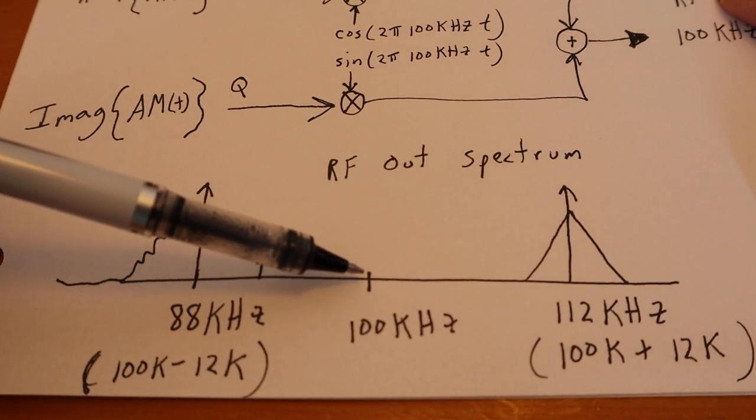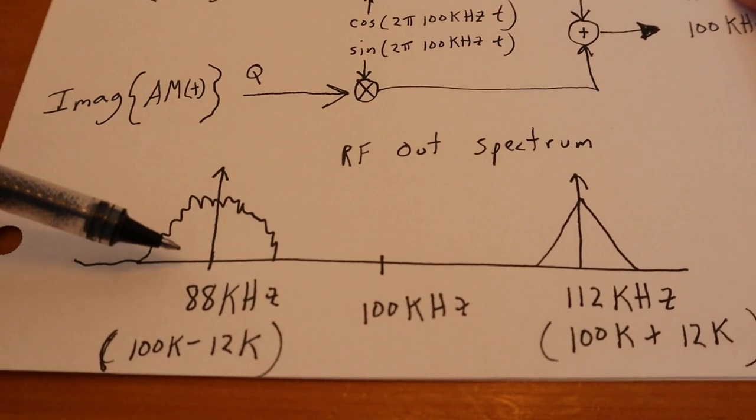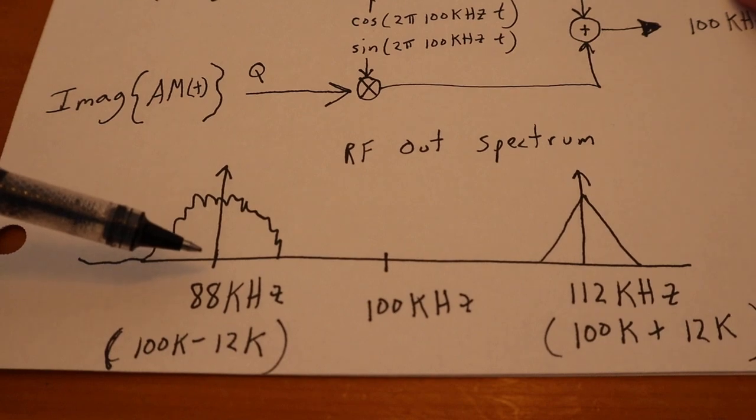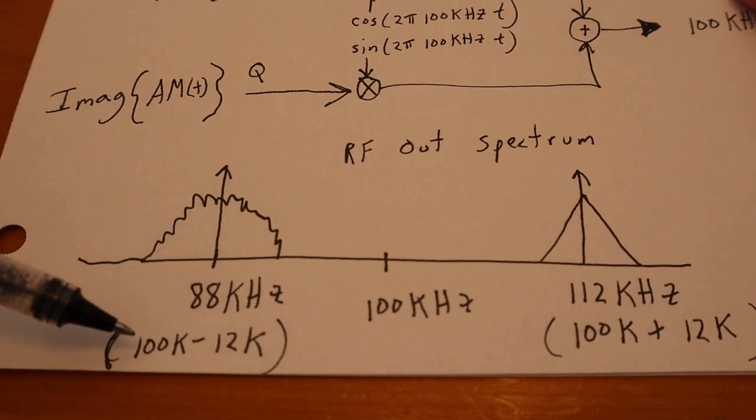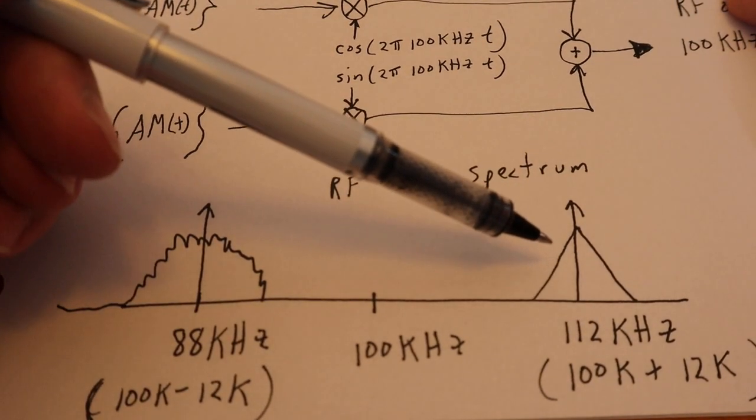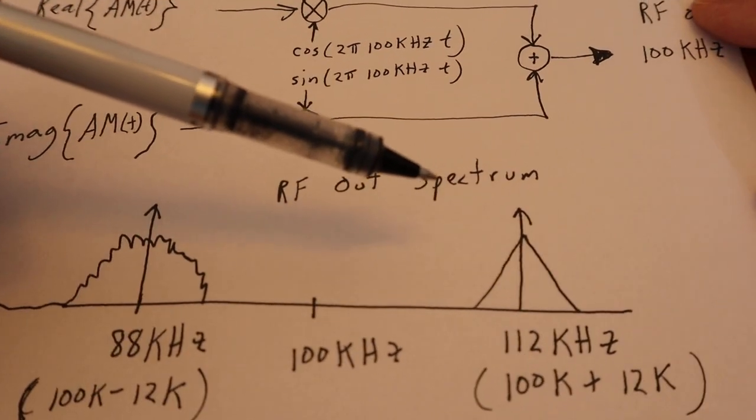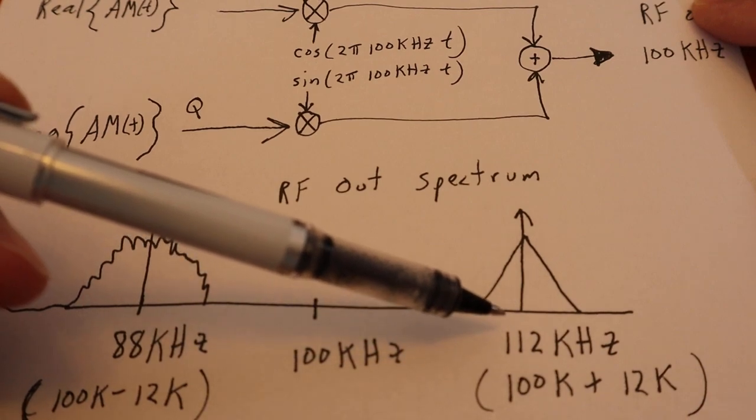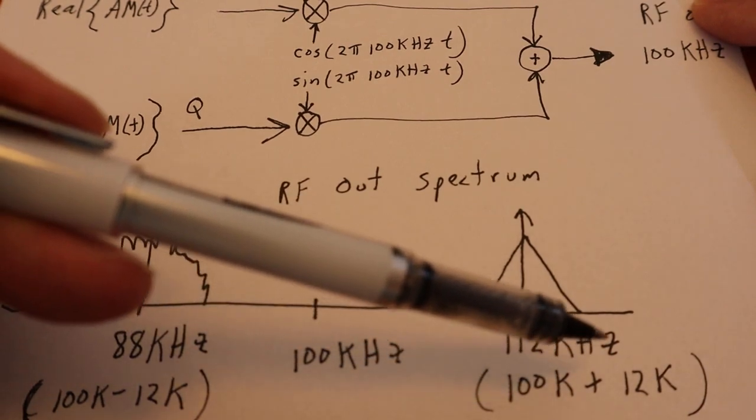DC now is 100 kHz. The minus 12 carrier that I was talking about in the AM equation now is going to come out at 88 kHz, 100k minus 12k. And the positive 12 kHz carrier I was talking about is going to come out now at 112 kHz, which is 100k plus 12k.